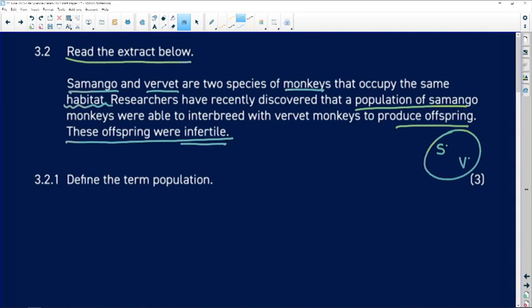So if the Samango crossed with the vervet and did produce offspring, they are infertile. They cannot go on producing Samango-vervet combinations.